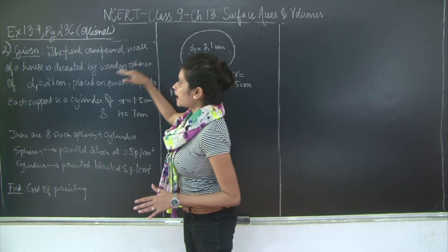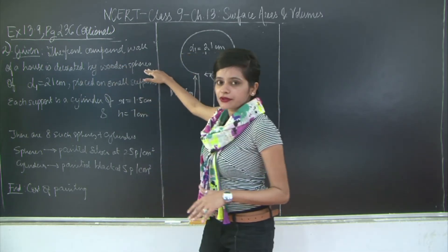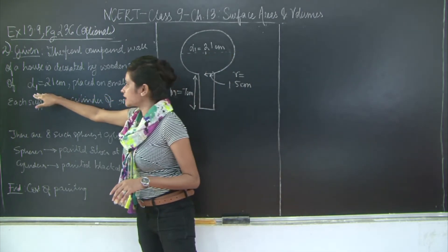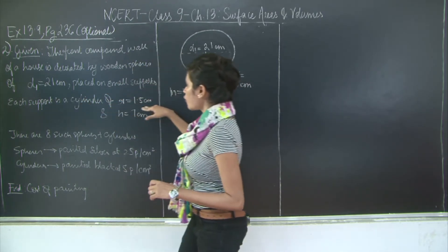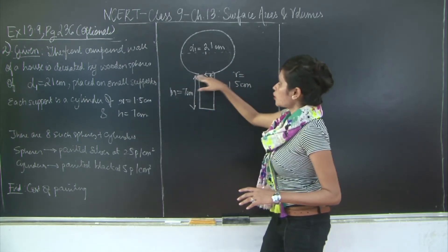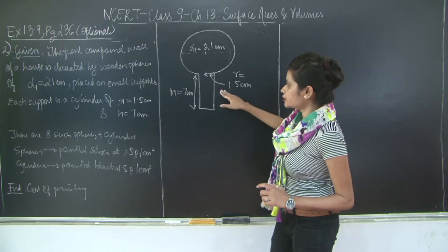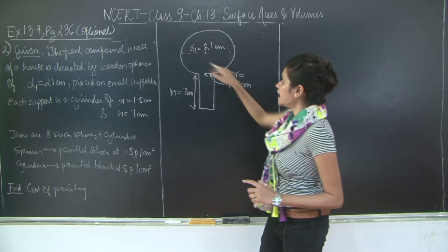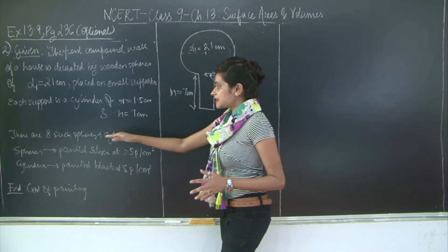The problem states that the front of a compound wall of a house is decorated by wooden spheres of diameter 21 centimeters, placed on small supports. Each support is a cylinder of radius 1.5 centimeters and height 7 centimeters. So in short, you have a sphere mounted on a cylinder. There are 8 such sphere-plus-cylinder units.